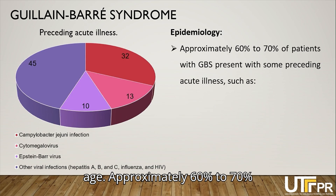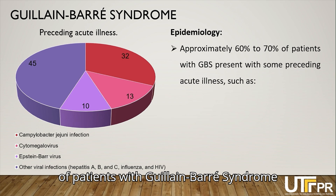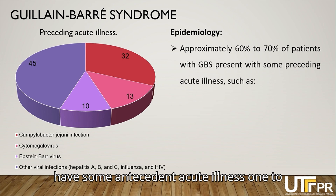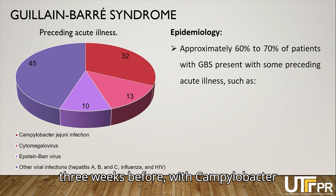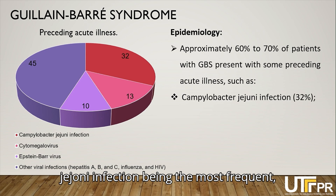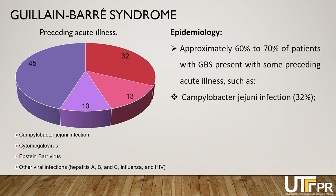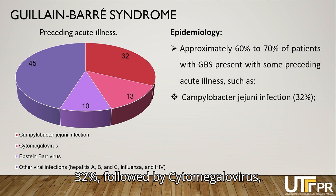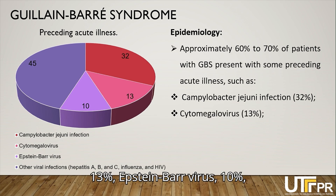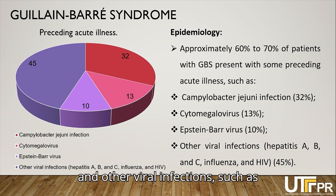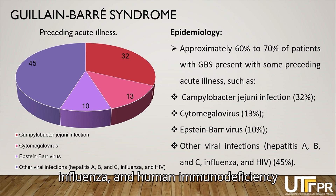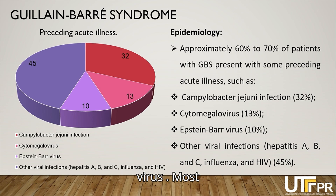Approximately 60% to 70% of patients with Guillabar Syndrome have some antecedent acute illness 1 to 3 weeks before onset, with Campylobacter jejuni infection being the most frequent at 32%, followed by cytomegalovirus at 13%, Epstein-Barr virus at 10%, and other viral infections such as hepatitis A, B, and C, influenza, and human immunodeficiency virus, HIV.